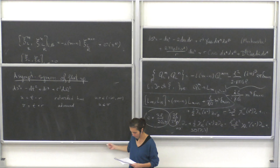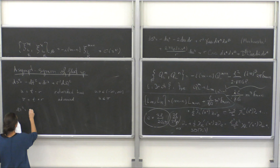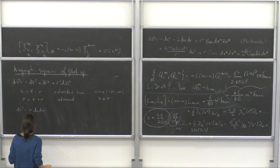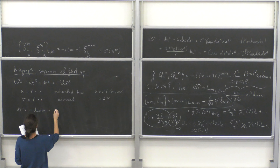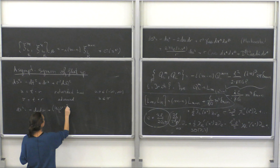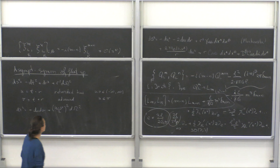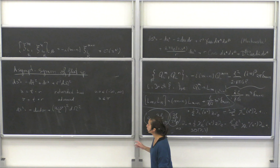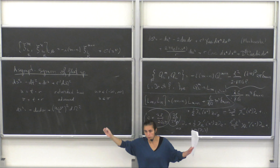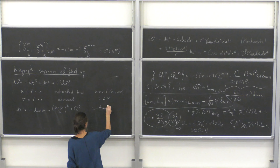In these coordinates the metric is ds² = −du dv + ((v−u)/2)² dΩ². To make the coordinate range compact we apply the arctan map: u = tan Ũ, v = tan Ṽ, so Ũ and Ṽ run between −π/2 and π/2 with Ũ ≤ Ṽ.